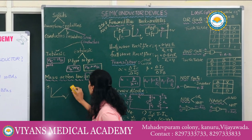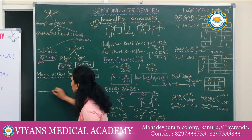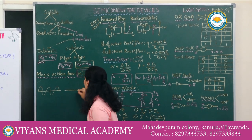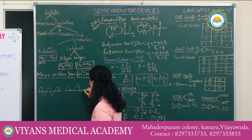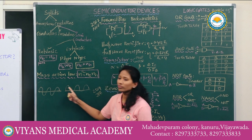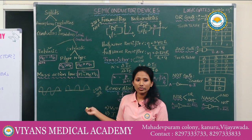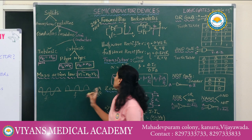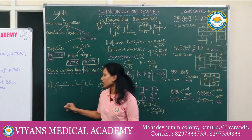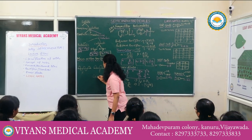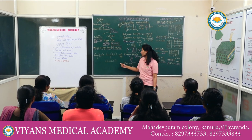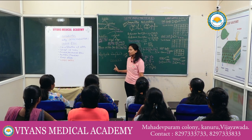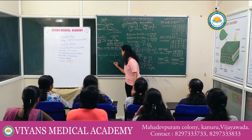In a half wave rectifier, only half of the input wave appears in the output, which is why we call it a half wave rectifier. The frequency of input and output remain the same — remember this. In a full wave rectifier, the total wave is rectified. The output frequency is doubled: if the input frequency is F, the output will be 2F.